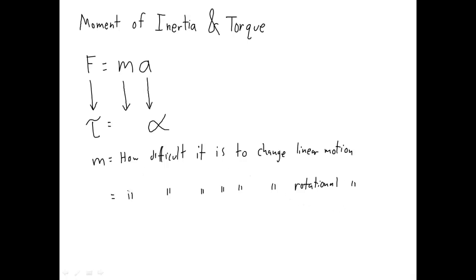How difficult it is to change rotational motion — how difficult it is to start something rotating or to stop something rotating. The word for this rotational equivalent of mass is moment of inertia. Moment of inertia is the rotational equivalent to mass. It's how difficult it is to change rotational motion.